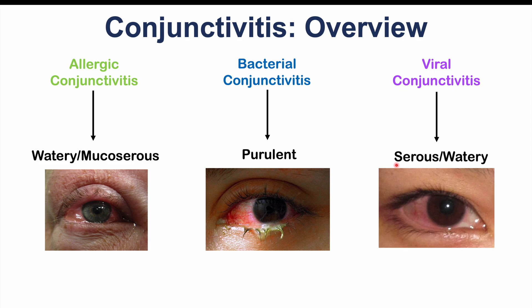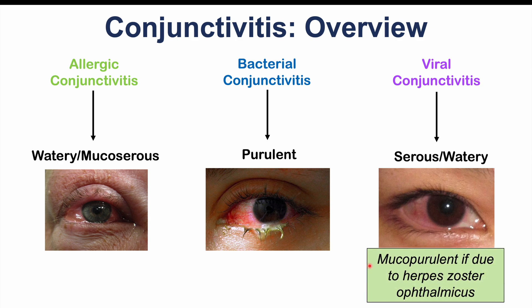In some cases, the discharge in viral conjunctivitis can be mucopurulent — a mixture of mucus and pus-like discharge — and this occurs in the case of herpes zoster ophthalmicus, which is an eye condition caused by a herpes zoster viral infection. Viral conjunctivitis is often going to occur in one eye or both eyes.